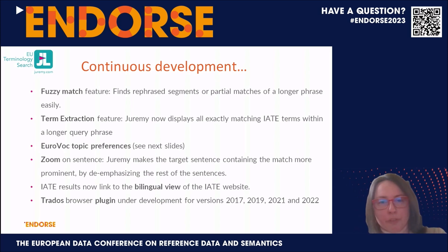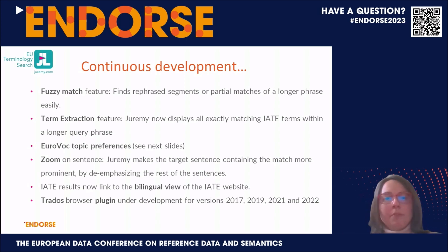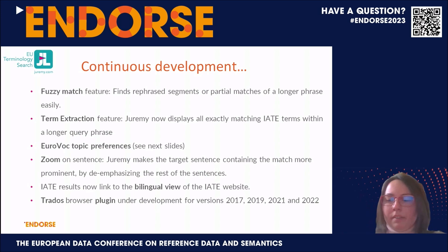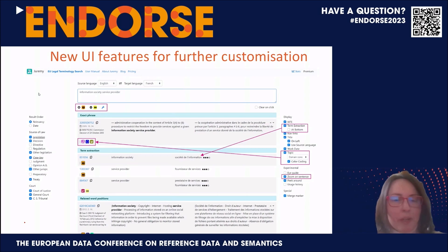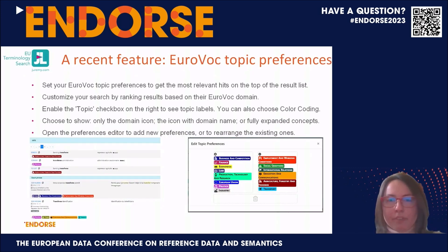We developed the fuzzy match feature, which finds rephrased segments even if the query is a longer phrase. The term extraction feature displays all exactly matching IATE terms within a query phrase. And the EuroVoc topic preference — also covered in the title of this presentation — makes it possible for users to set domain preferences at the result list.